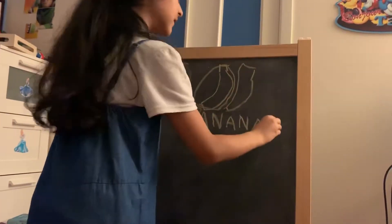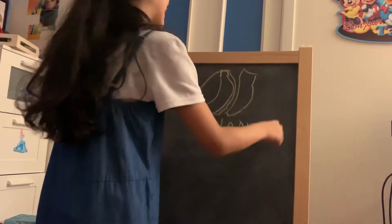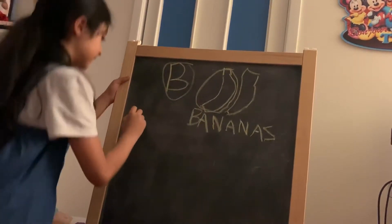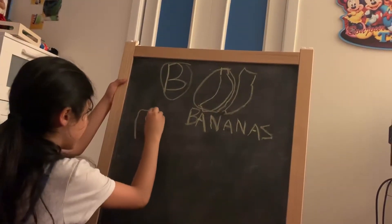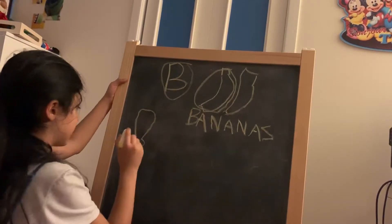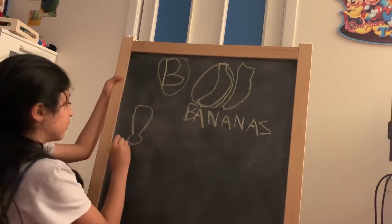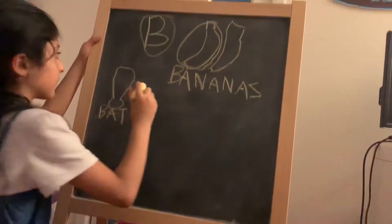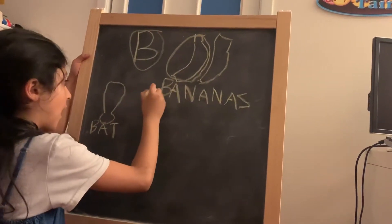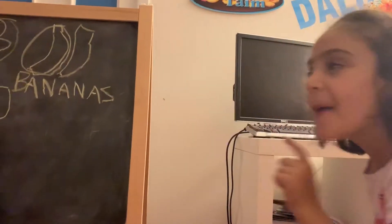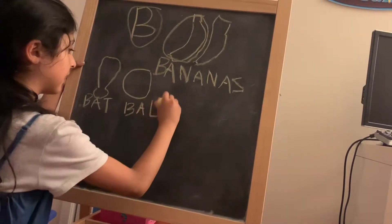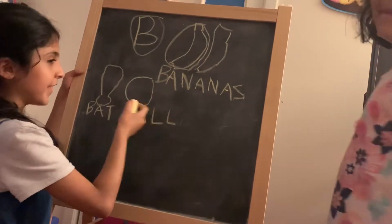If you want to say two or more, you also have to do this. Now B is for bat — bat is for baseball. So bat: B, A, T. And you can also say ball: B, A, L, L. And that's it.